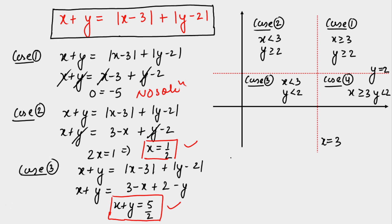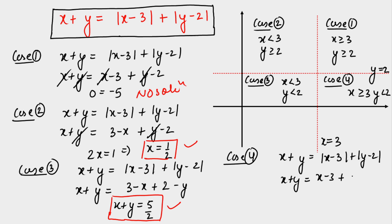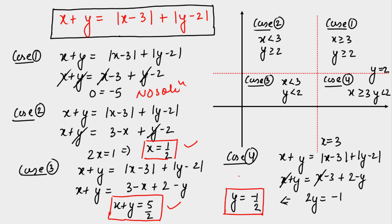Case 4: x ≥ 3 and y < 2. The equation becomes x + y = (x−3) + (2−y). The x terms cancel, giving 2y = −1, so y = −1/2. Since we are working in the first quadrant, y must be non-negative, so this solution is rejected.